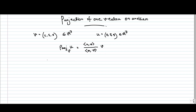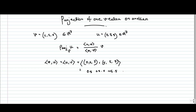Let us calculate. The inner product of U and V, which is the same as the inner product of V and U, is simply the dot product. We have the two vectors (0,5,5) and (5,5,5). So we get 0×5 + 5×5 + 5×5, which equals 0 + 25 + 25 = 50. Similarly, the inner product of V and V gives 25 + 25 + 25 = 75.